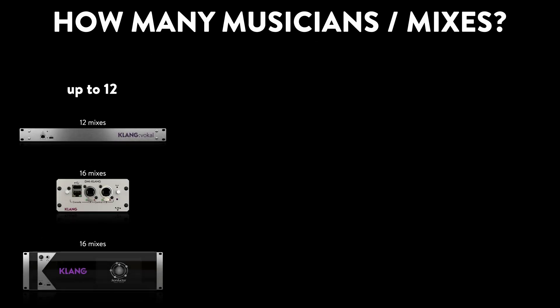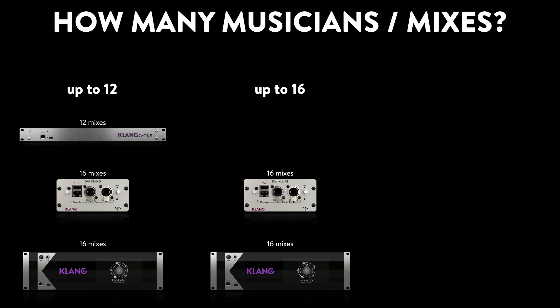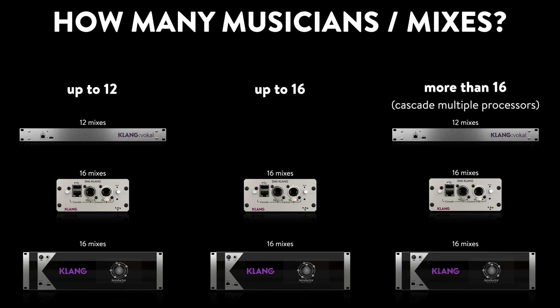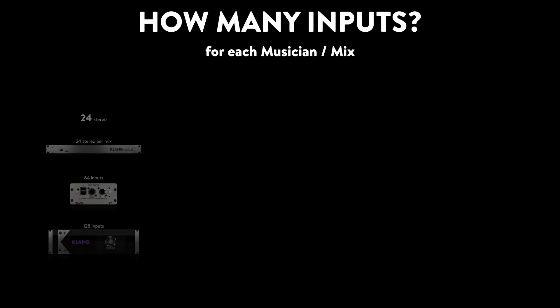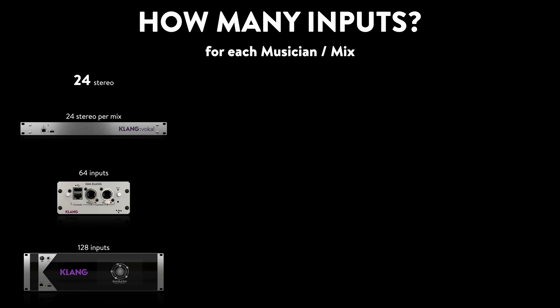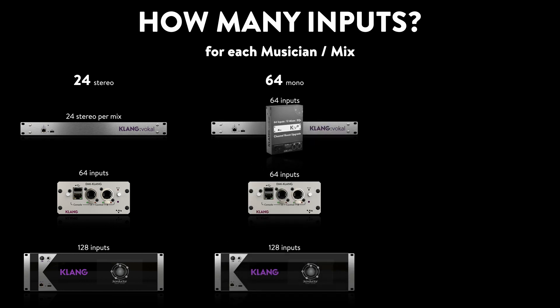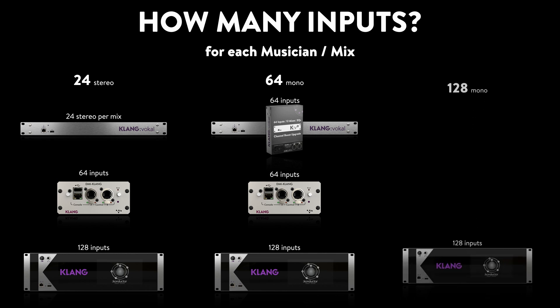Up to 12 musicians can easily be taken care of with all three processors. A single DMI Clang and Clang Conductor will handle 16 musicians, and all processors can be cascaded for larger orchestras. If you need 24 stereo channels for each musician, you're going to be fine with all three options. A full 64 channels accessible in each mix can be done with DMI, the Vocal Plus upgrade, as well as Conductor, while the latter actually features an astonishing 128 channels.